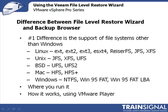The number one difference with the File Level Restore Wizard is that it restores Linux files. You can see the list on your screen — Linux, Unix, BSD, even Mac files, and older Windows file types can be restored using the File Level Restore Wizard.